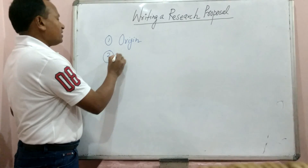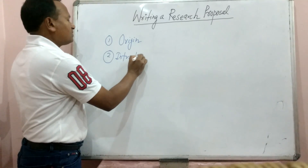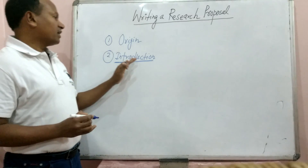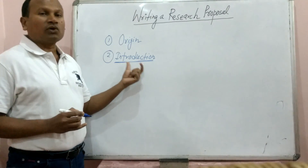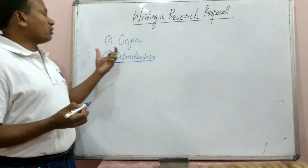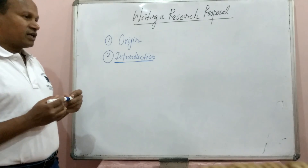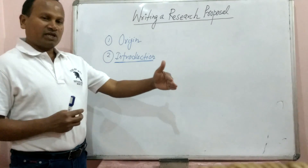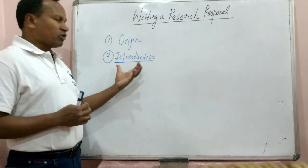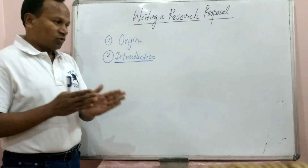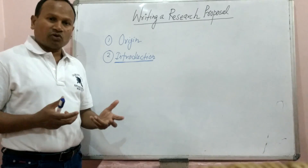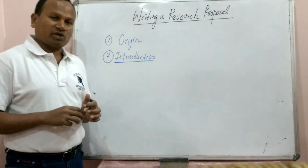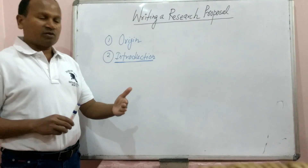The second part is the introduction section. As we write a research paper with an introduction, in a research proposal also there is an introduction section. Introduction is a general theoretical background of the research proposal. For example, if we are interested to write something using deep learning — a deep learning-based application such as a remote sensing application — we have to give the general theoretical background of what that application is about, what deep learning is about, and how deep learning can be used to solve the problems existing in remote sensing applications.